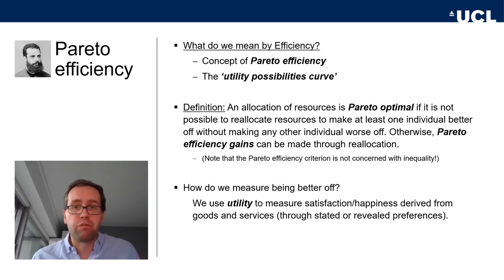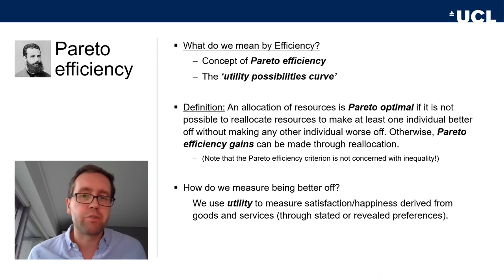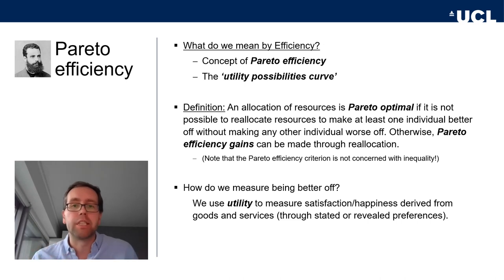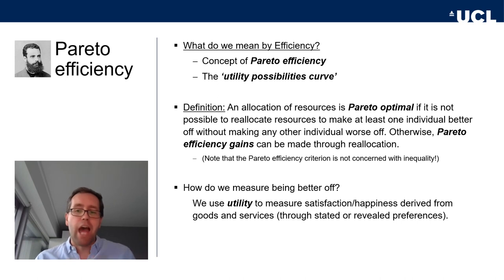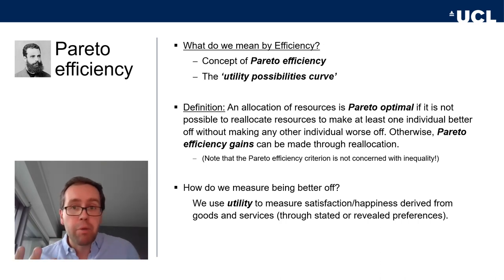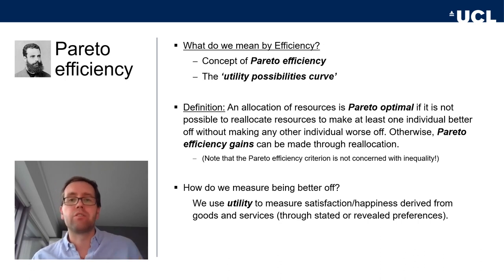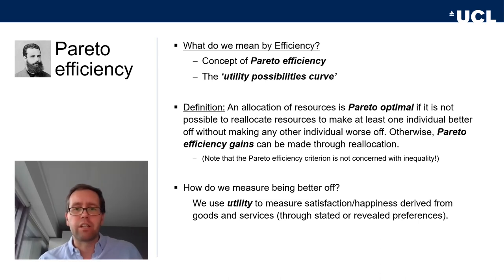How do we measure 'better off'? We think about utility — how much pleasure or gain we derive from some good. It's the happiness derived from goods and services. We can think about this through asking people what they value, or through revealed preferences: how much people are willing to pay for certain things. We need some concept of how much people want or like certain goods or services.